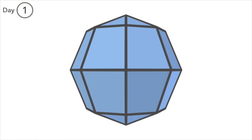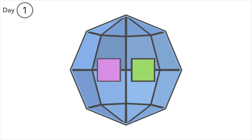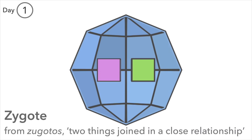Day 1. The egg is invaded by a sperm, together forming the zygote. It contains male and female pronuclei. Its cytoplasm is surrounded by a tough glycoprotein shell. Zygote means two things joined in a close relationship because sperm and egg have joined to become one cell.